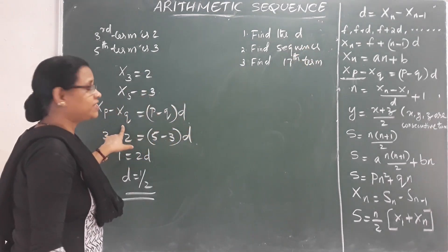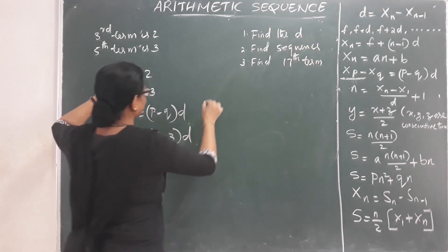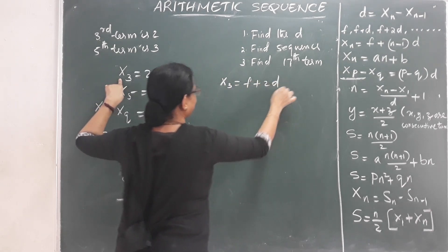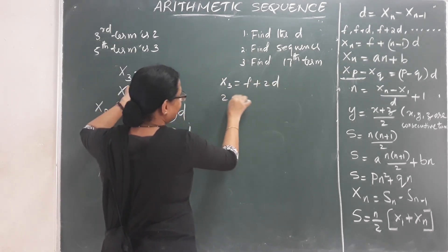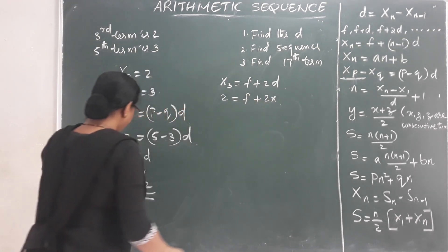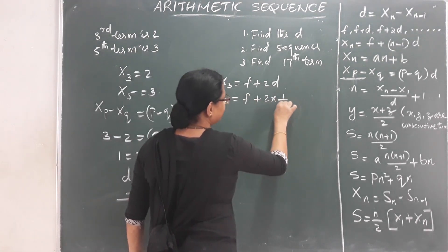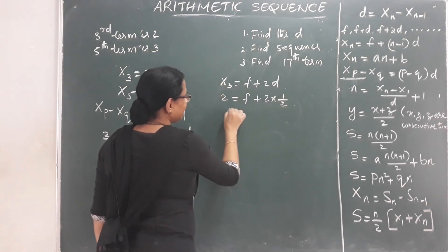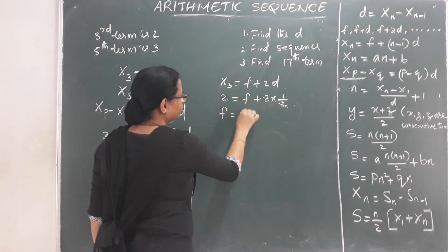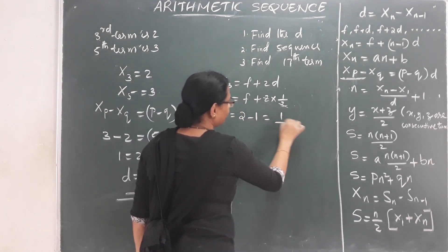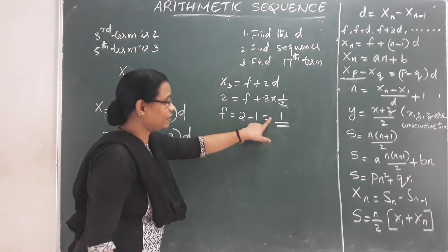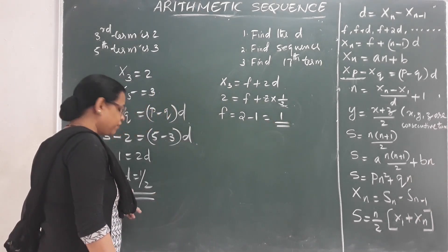Now we need the first term. Using x3 equals f plus 2d: 2 equals f plus 2 into (1/2), so 2 equals f plus 1, giving f equals 1. So the first term is 1 and the common difference is 1/2.